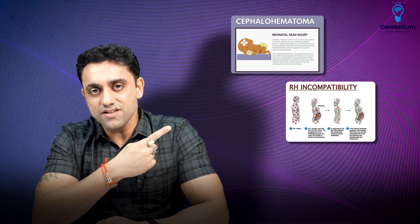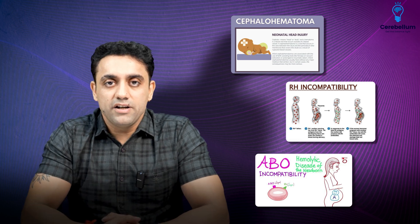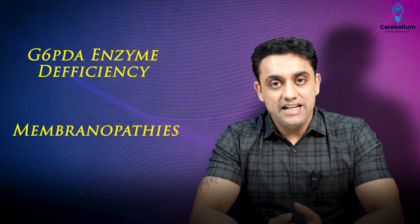The causes of neonatal jaundice include: cephalohematoma, Rh incompatibility, ABO incompatibility, G6PD enzyme deficiency, and membranopathies like hereditary spherocytosis, pycnocytosis, and elliptocytosis. These are important points to appreciate for exam purposes.